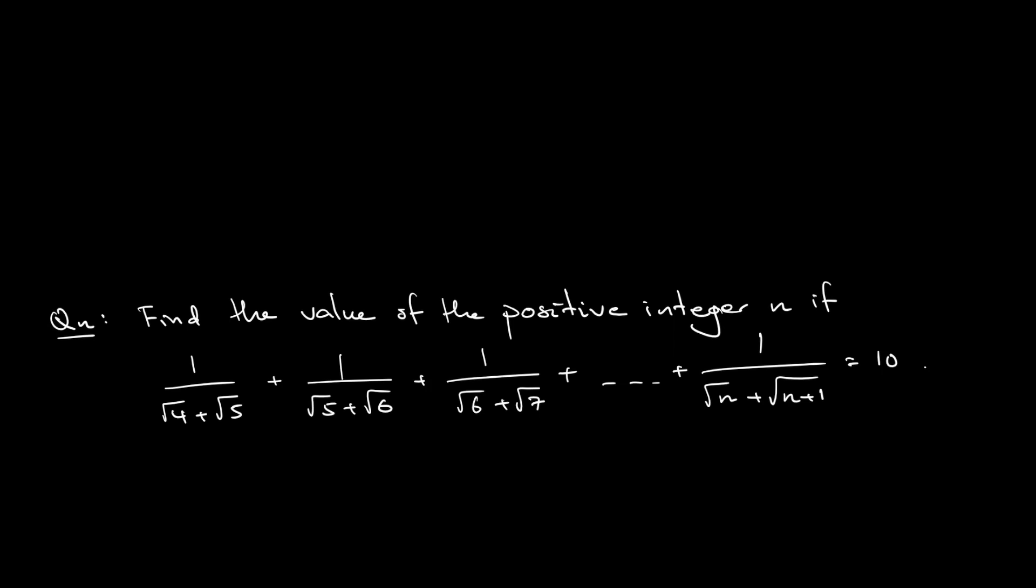For each fraction we notice there is a general term. The general term is: every fraction always starts with 1 divided by square root of, let's say k, and the second number is always k plus 1, one more than the previous number.